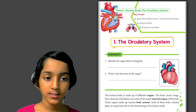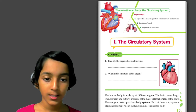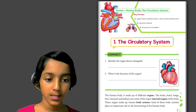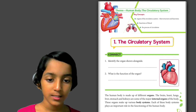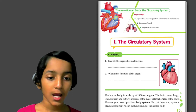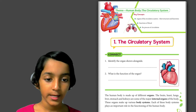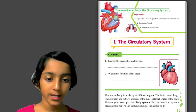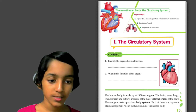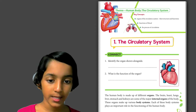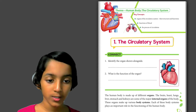The circulatory system. The human body is made up of different organs. The brain, heart, lungs, liver, stomach and kidneys are some of the major internal organs of the body. These organs make up various body systems. Each of these body systems plays an important role in the functioning of the human body.